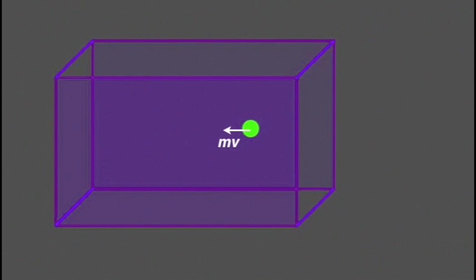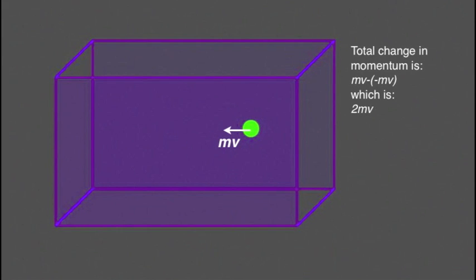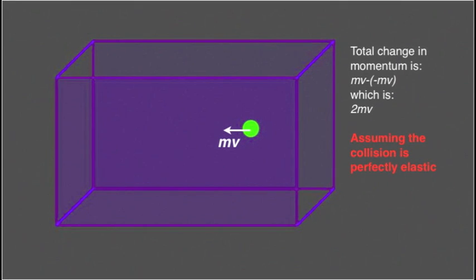If it rebounds elastically from the end of the box, then its momentum will be mv, but in the opposite direction. Remembering that momentum is a vector quantity, the change in momentum is then mv minus mv, which is 2mv. Remember that we are making the assumption that the collision is perfectly elastic.